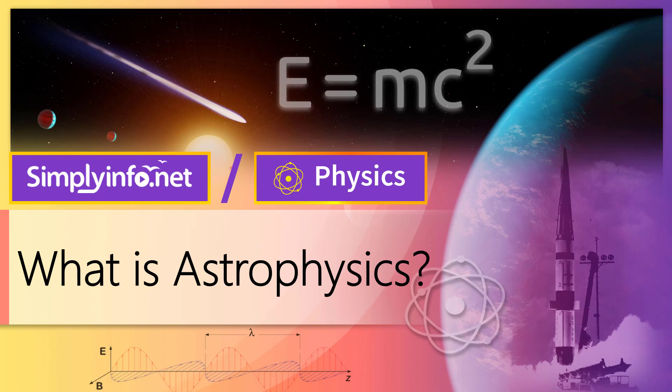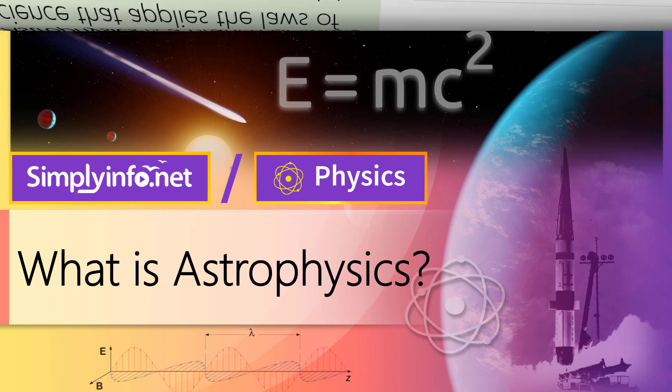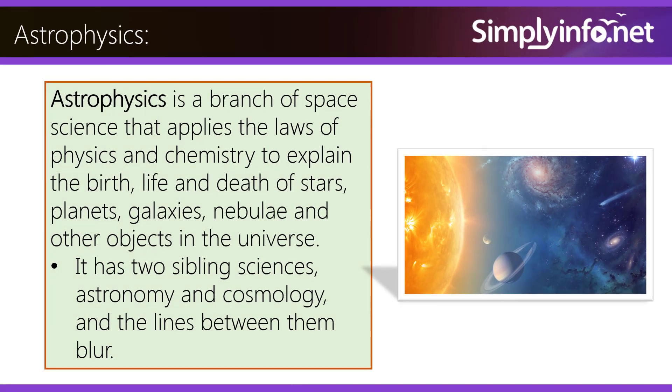What is astrophysics? Astrophysics is a branch of space science that applies the laws of physics and chemistry to explain the birth, life, and death of stars, planets, galaxies, nebulae, and other objects in the universe. It has two sibling sciences, astronomy and cosmology, and the lines between them blur.